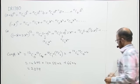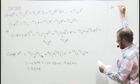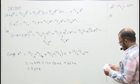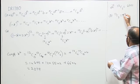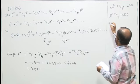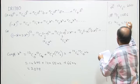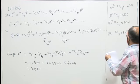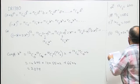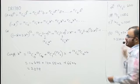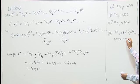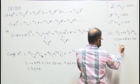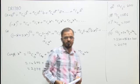Coming to the options: option A is 12C3 = 220 — not the answer. Option B is 13C3 = 286 — also not the answer. Option C is 14C4 = 1001 — also not the answer. Option D is 12C3 + 3·13C3 + 14C4 = 220 + 858 + 1001 = 2079. Hence option D is the answer to this question.